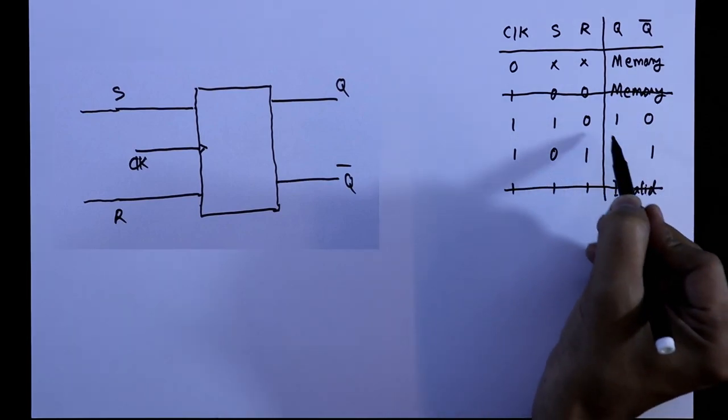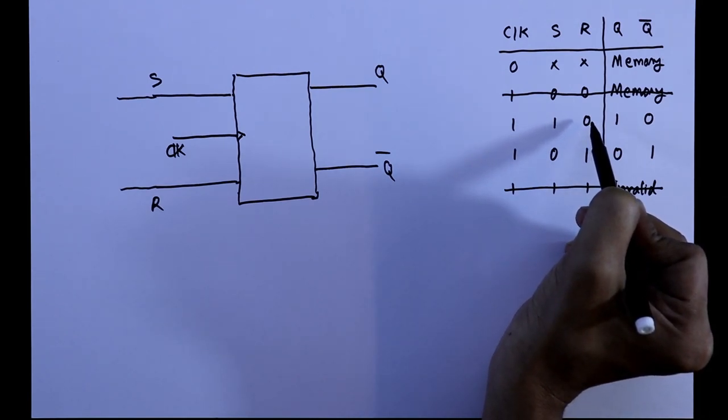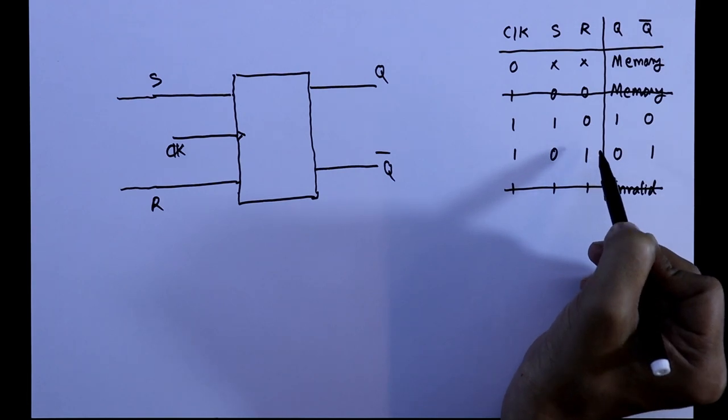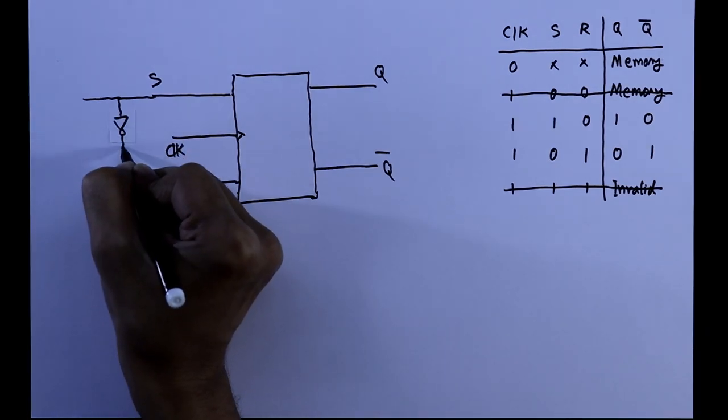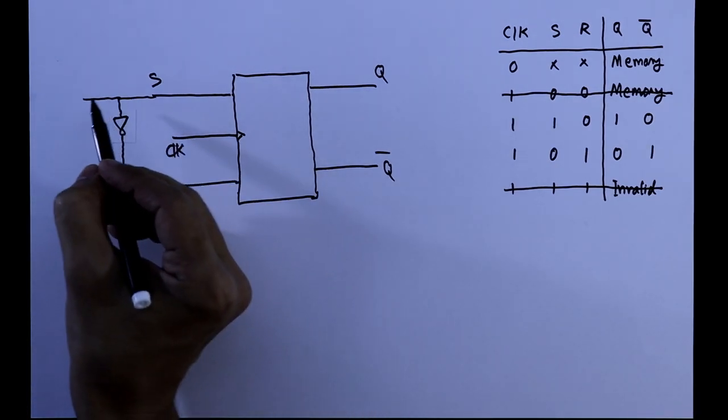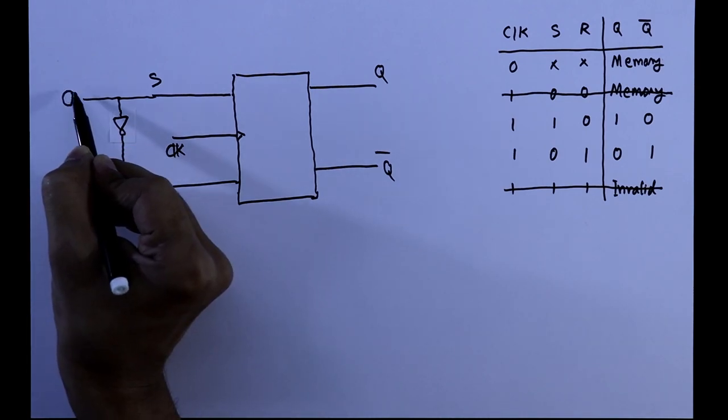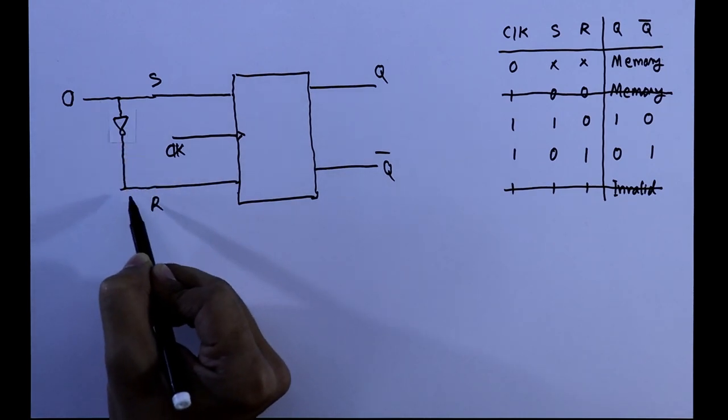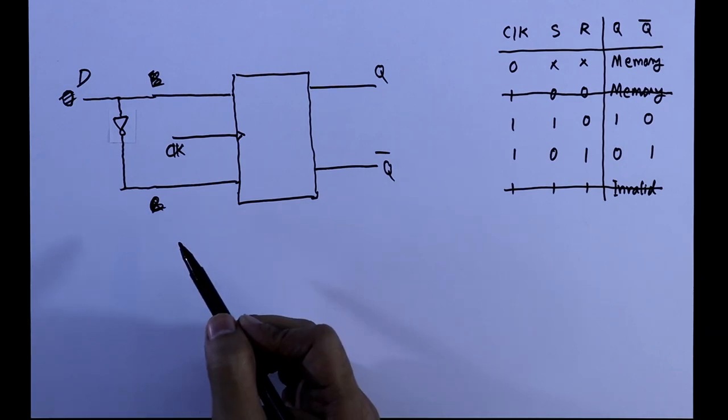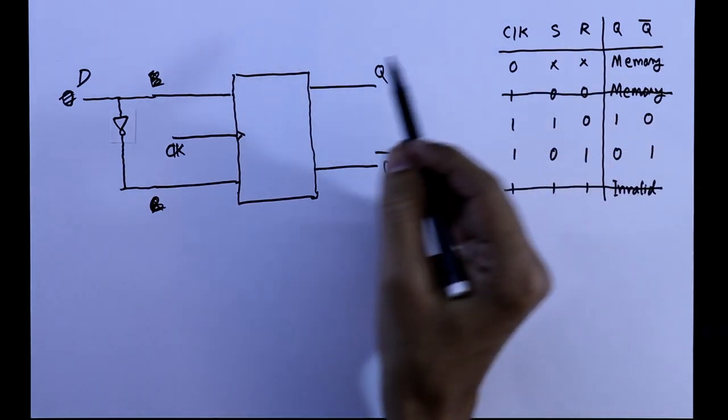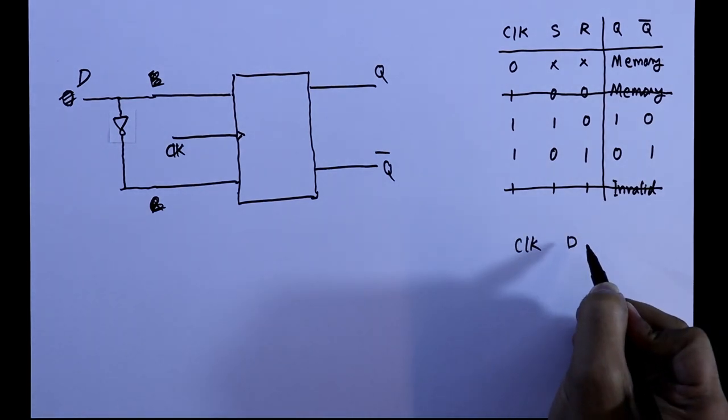Now see these two inputs. When S is 1 then R is 0, and whenever S is 0 R is 1. So what we will do is we will connect a NOT gate in between these two. So if here it is 1 then obviously here we will get 0, and whenever we put here 0 then we will get 1. And this is our D flip-flop. So instead of three inputs, now in the D flip-flop we have two inputs: one is clock and another one is D.